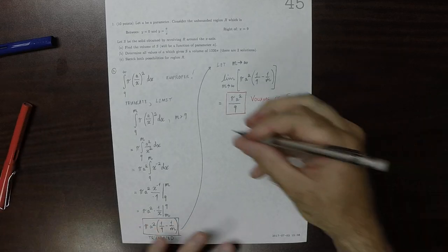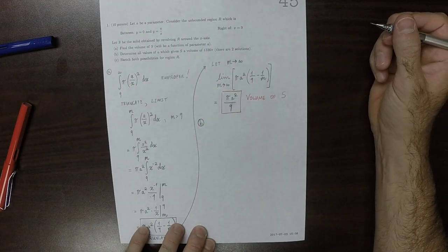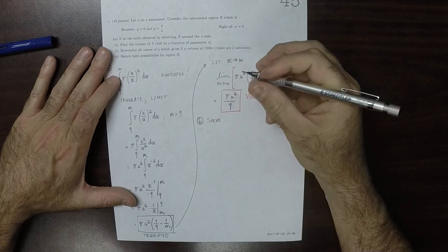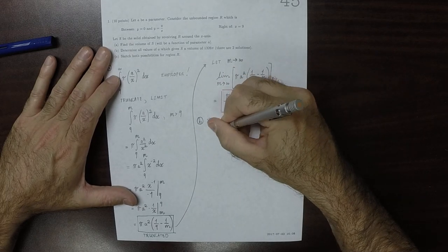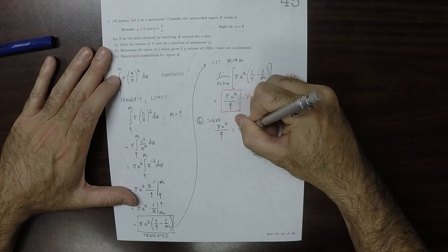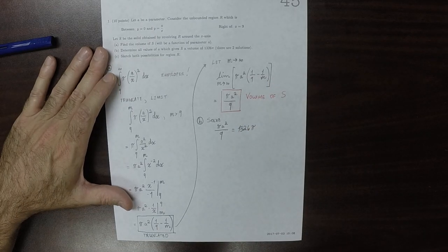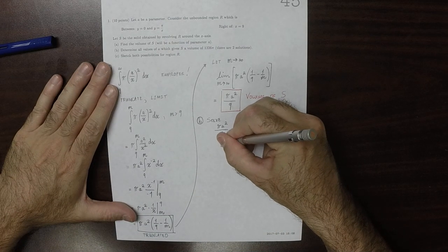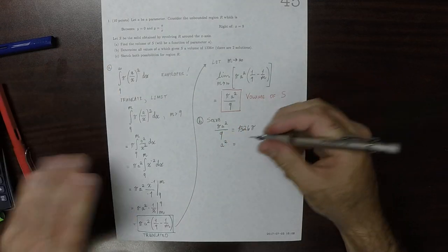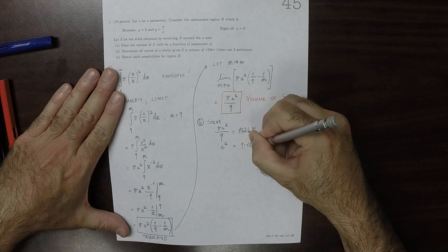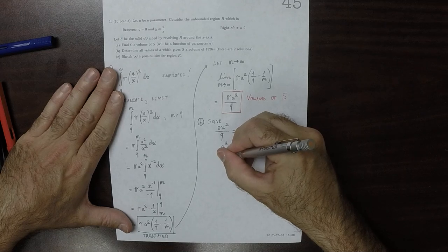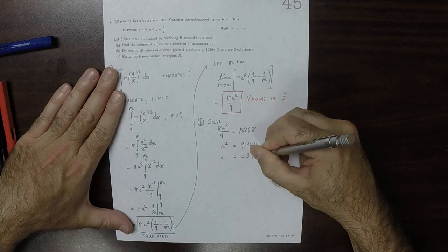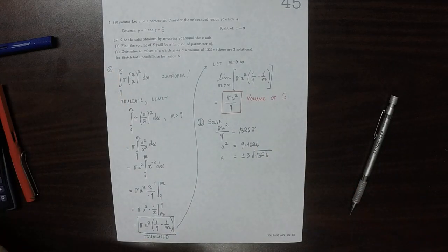Okay, so now for part B. The request is determine all values of a. That is to say, we want to solve pi a squared over 9 equal to 1326 pi. We want to solve that equation. Well, we can divide both sides by pi, multiply both sides by 9, and we obtain that a squared is 9 multiplied by 1326.